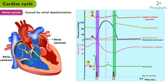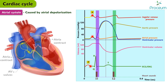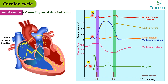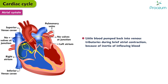The atria exert pressure on the blood within, which forces blood through the open atrioventricular valves into the ventricles. Because there are no valves at the junction of the vena cava and right atrium or at the junction of the pulmonary veins and left atrium, atrial contraction may force blood in both directions. However, little blood is actually pumped back into the venous tributaries during the brief atrial contraction, mainly because of the inertia of the incoming blood.